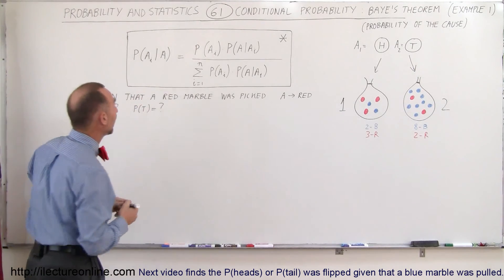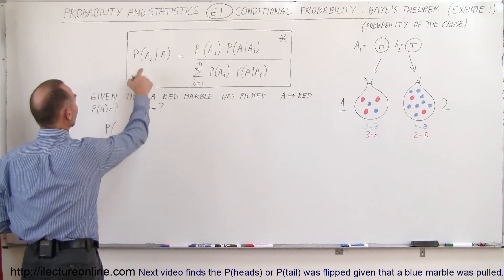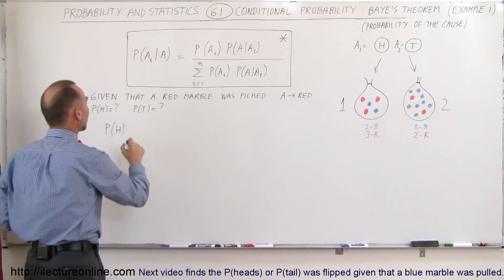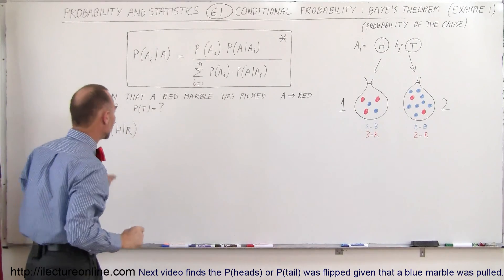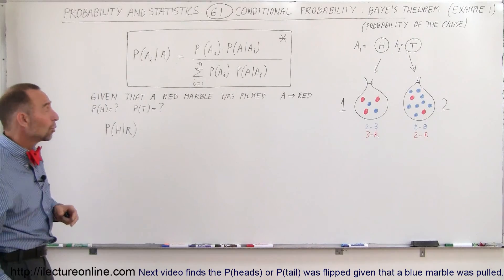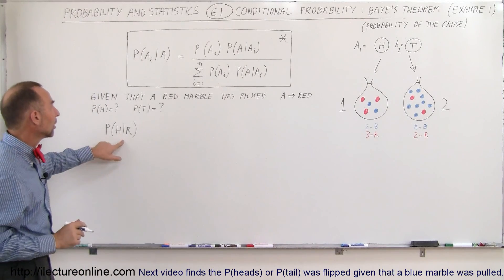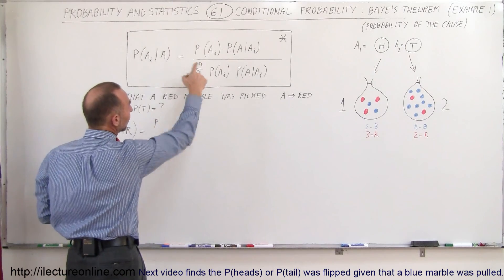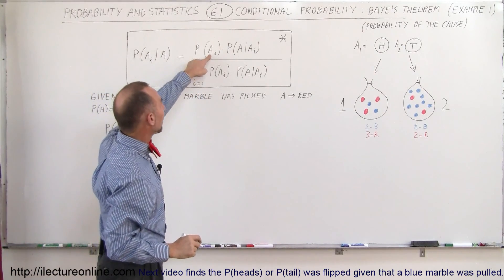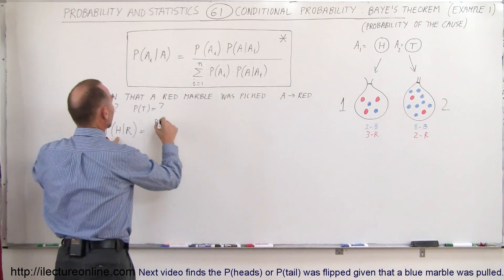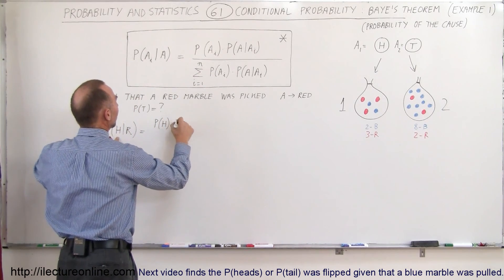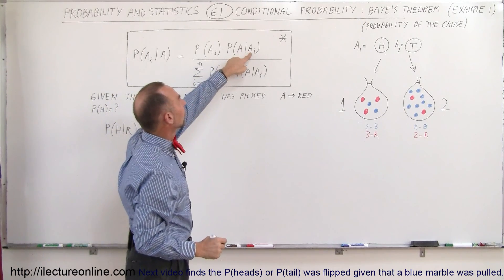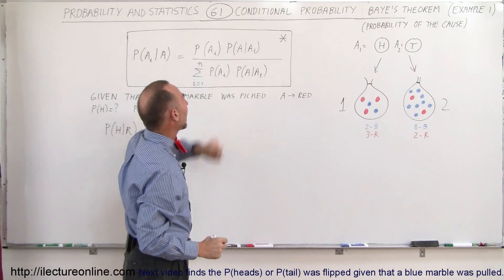Here's the equation. The probability of A sub i — which would be heads — given that we pulled a red marble out of one of the two bags (we don't even know which one, we just know it was a red marble) — has to be equal to the probability that A sub i, so heads, times the probability that we had a red marble provided that A sub i, that we had heads.